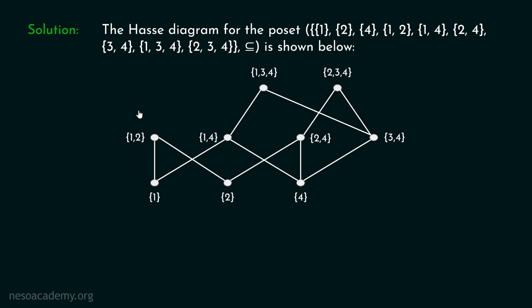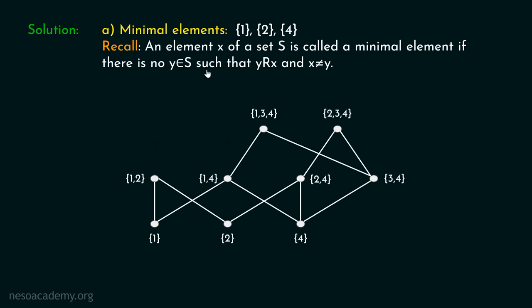Now let's answer all the questions one by one. First, we have to find the minimal elements of this particular Hasse diagram. The minimal elements are these three elements, because no element is related to them. Therefore, the minimal elements are {1}, {2}, and {4}. An element x of a set S is called a minimal element if there is no y belonging to S such that y is related to x and x is not equal to y. These two conditions must be satisfied.